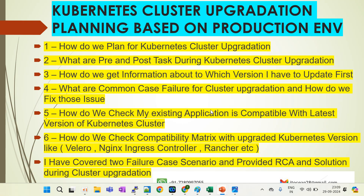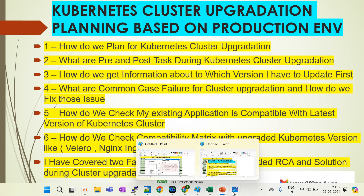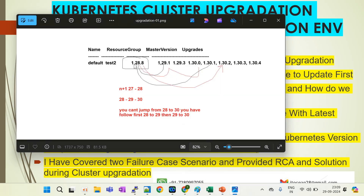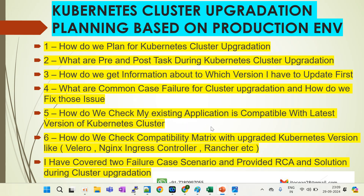In this series I cover all case scenarios in which upgradation will fail. For example, suppose you are running version 1.28 and you want to upgrade to version 1.30 — you first need to check whether your existing applications are supported or not, and how to check the compatibility matrix. You can see applications like Velero, NGINX Ingress Controller, and Rancher running in the old version, and you need to check if they are compatible with the new cluster version.